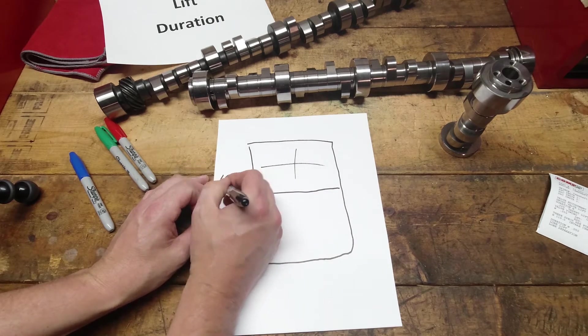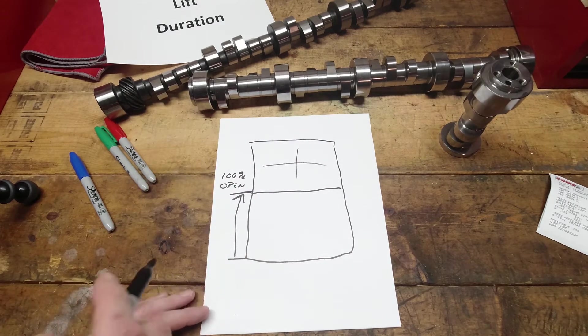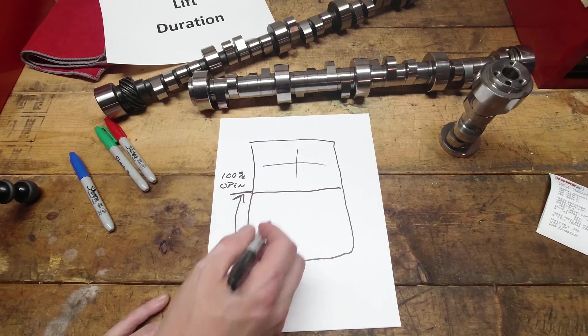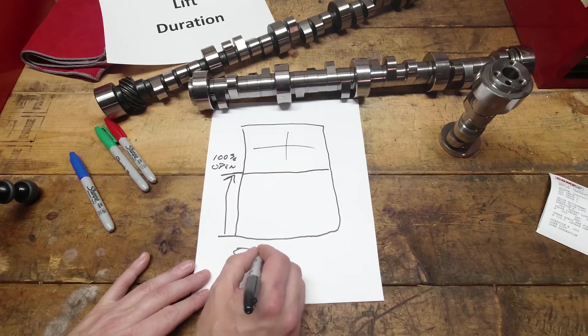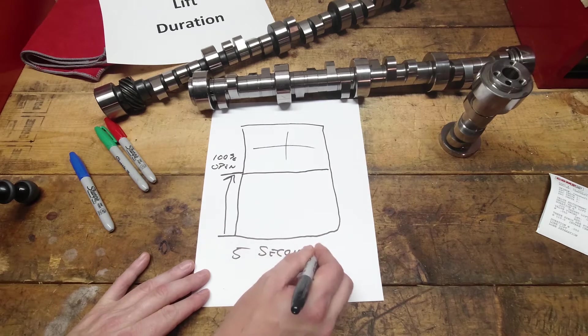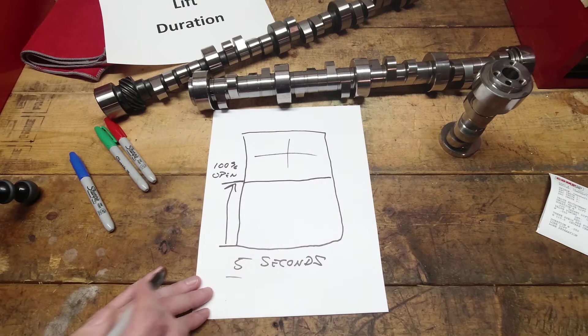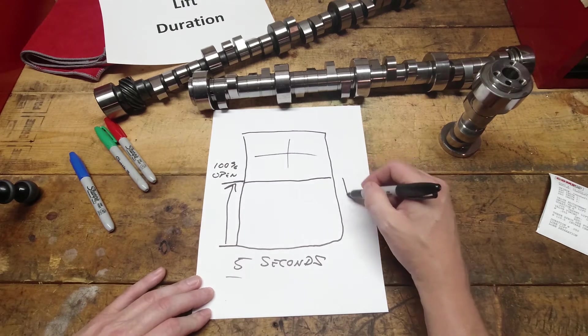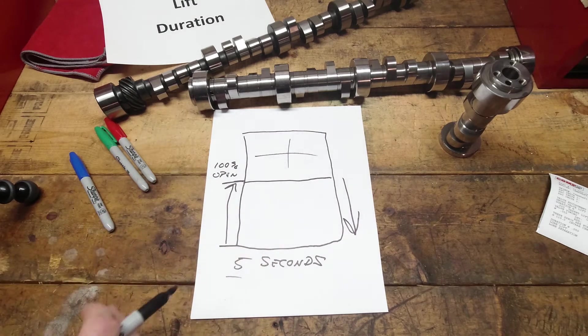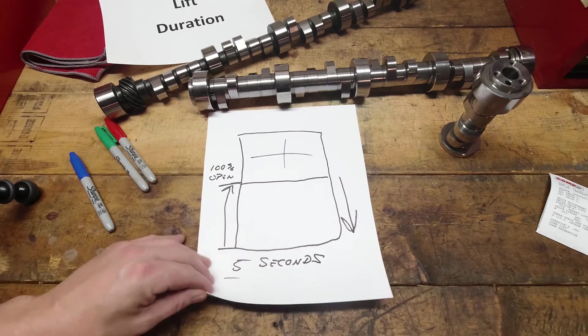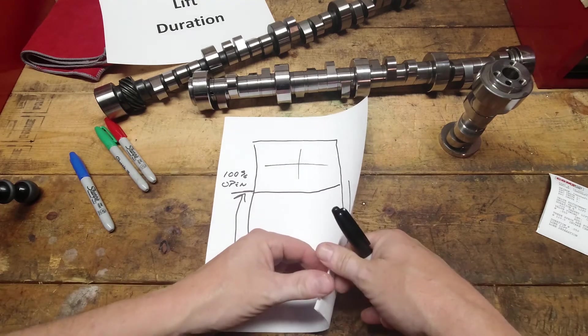If you open up this window, if this is all the way closed and up here is all the way open, and you open up this window 100%, 100% open, all right. But you only leave the window open, let's say for five seconds. Five seconds. And then after five seconds is over, you shut the window. It's closed. Five seconds.